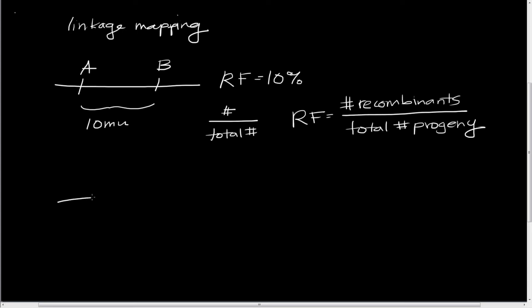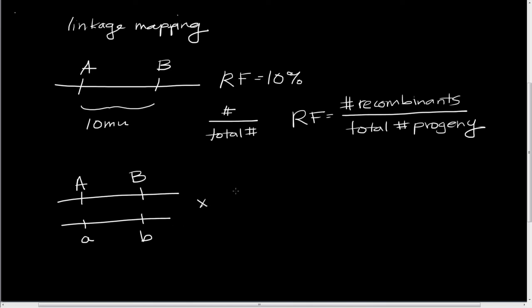In this case we're going to take an individual who is heterozygous at both loci. You might want to be thinking about how we generate an individual that has big A, big B on one chromosome and little a, little b on the other chromosome. We're going to cross them to our doubly recessive homozygote: little a, little b over little a, little b.